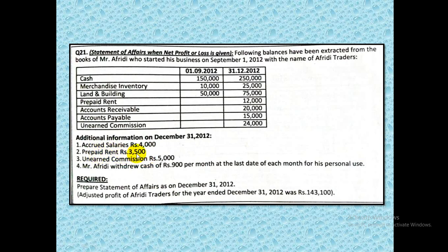Then prepaid rent — previously prepaid rent was there; at year end it is only 3,500 left. Whatever is no longer prepaid becomes an expense. In such cases we always debit the rent expense account and credit the prepaid rent account.